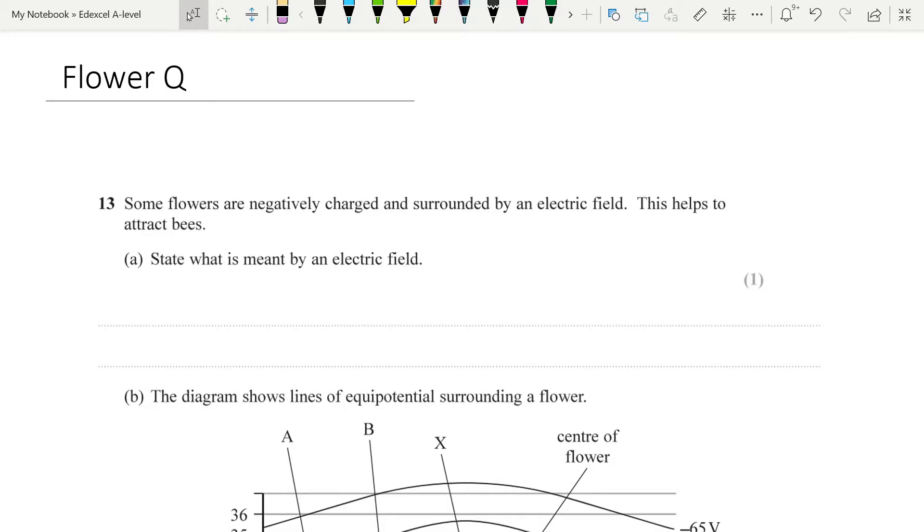Some flowers are negatively charged and surrounded by an electric field. This helps to attract bees. State what is meant by an electric field. Nothing too tricky so far. An electric field is a region in which a charged particle experiences a force. Just something you have to learn. And so it is worth getting it on a flashcard or something like that so that you can remind yourself every so often what it is and so that it embeds itself in your brain.